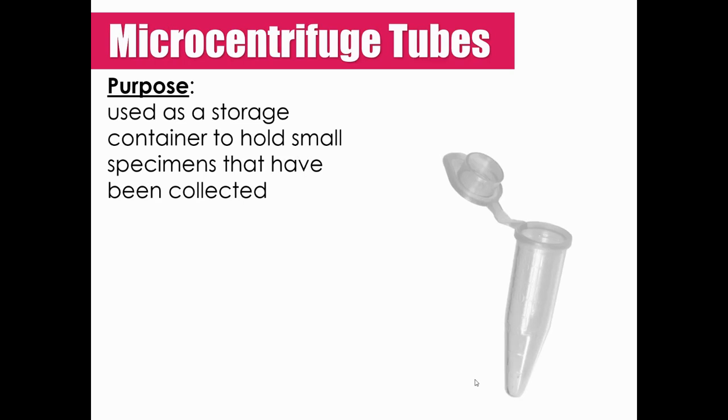Microcentrifuge tubes. These are pieces of equipment that hold really small specimens or small evidence. In unit one, we're going to do like an introduction to forensics where we talk about how to process a crime scene and collect evidence. And some of the evidence that we will collect will be so small that it has to be placed in a small container. And so these microcentrifuge tubes are a great way to store trace evidence that's really small. There are also some labs that we do this year where we pretend to be the lab and we've got evidence that has been collected from a crime scene and it's sent to our lab for testing and it will come to us in these microcentrifuge tubes.